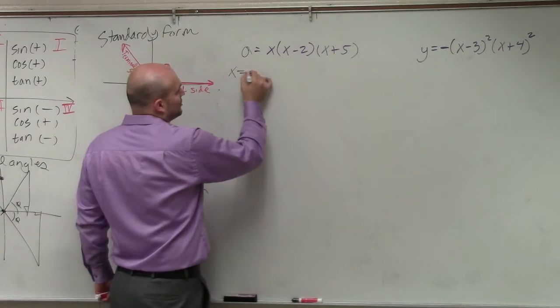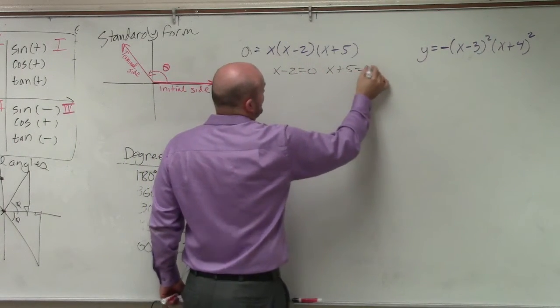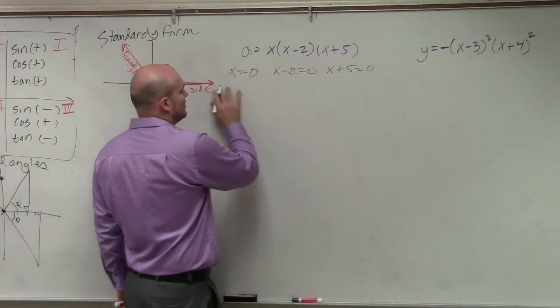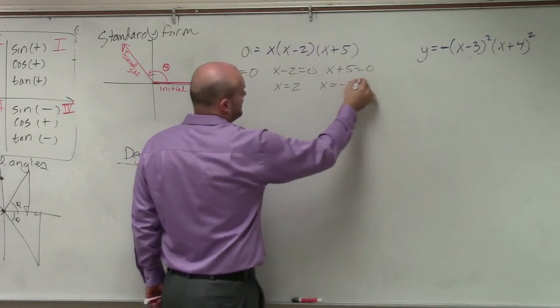We can just go and apply the zero product property. So we set each of our factors equal to zero, and then to find the zeros we simply just solve. Well, we already have x equals 0, so we have x equals 2, and x equals negative 5 by solving.